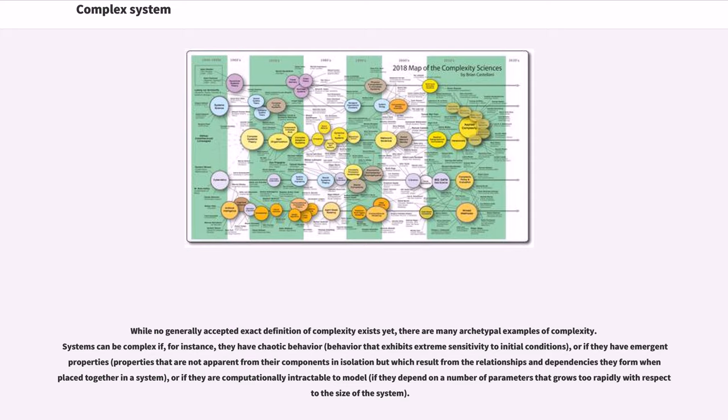Systems can be complex if, for instance, they have chaotic behavior, behavior that exhibits extreme sensitivity to initial conditions, or if they have emergent properties, properties that are not apparent from their components in isolation but which result from the relationships and dependencies they form when placed together in a system, or if they are computationally intractable to model, if they depend on a number of parameters that grows too rapidly with respect to the size of the system.